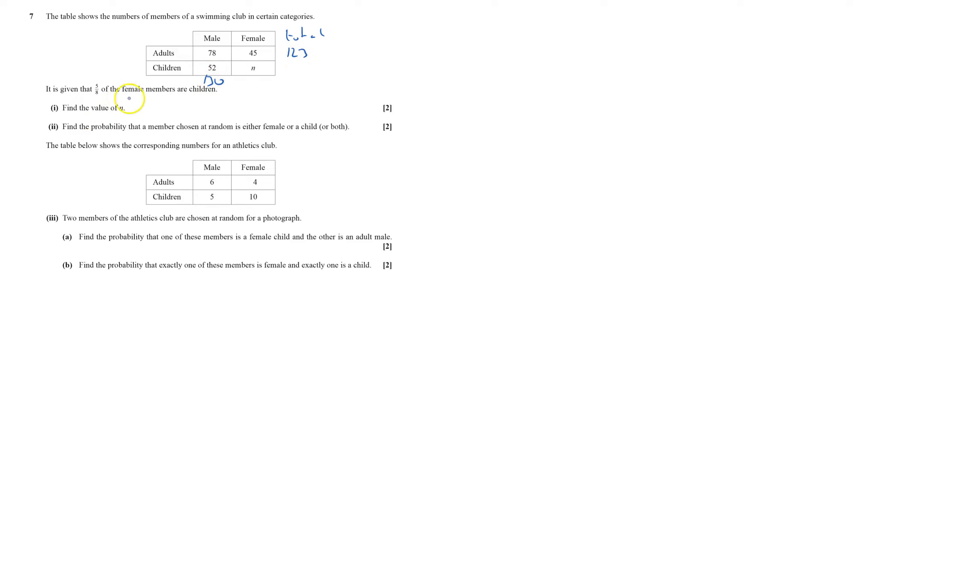Five-eighths of the members are children, so that tells me that N over the total number of members, which is 45 plus N, that fraction is 5/8. Times everything through by 45 plus N, times everything through by 8.